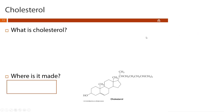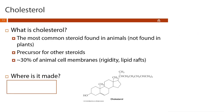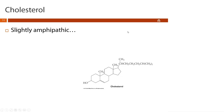Cholesterol is synthesized in the liver and it's the most common steroid found in animals — it's not found in other organisms. It acts primarily as the precursor for all other steroids and is also a minor component of our cell membranes, which adds rigidity to them. Cholesterol is slightly amphipathic, meaning this molecule has both a hydrophobic part and a hydrophilic part.